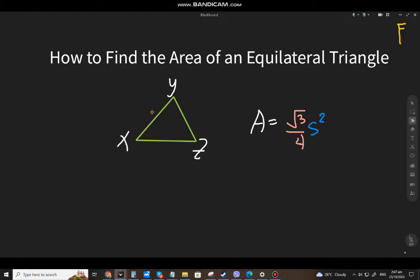When you say equilateral triangle, all sides are equal. If this is 3 meters, all sides are 3 meters. And the three angles are 60 degrees each, because remember that the sum of the interior angles of a triangle is 180.